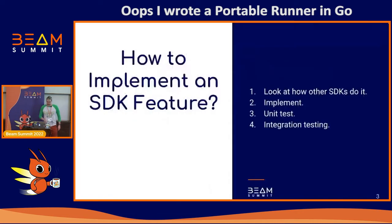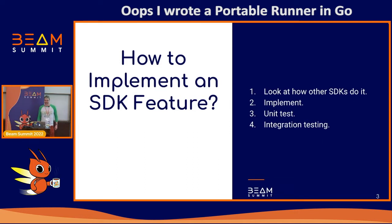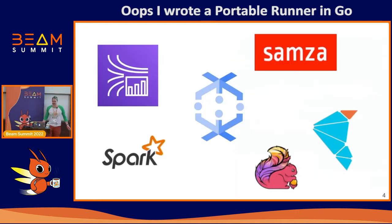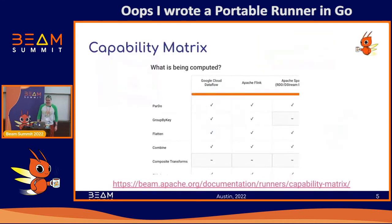At the core of this talk isn't really a question about runners — it's about SDKs. How do we implement new SDK-side features? The tricky bit is really how we end up integration testing these features against runners. But you might exclaim: we have runners, just run them against those, and if it works, it works, right? Well, no. Different runners have different abilities. We have this big compatibility matrix on the website that points out the varying levels of detail of what each runner supports.